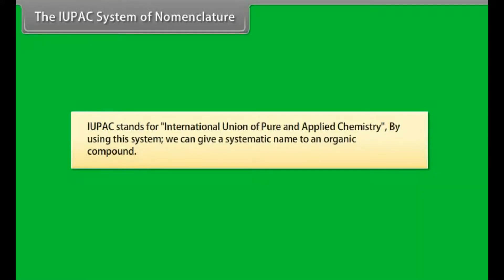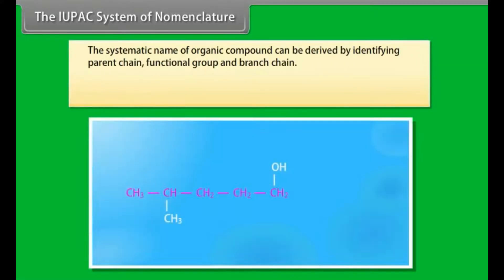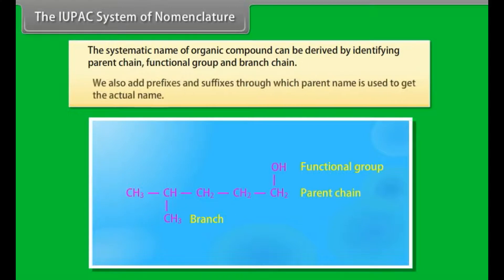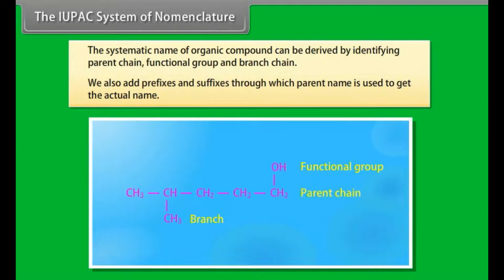The IUPAC system of nomenclature: IUPAC stands for International Union of Pure and Applied Chemistry. By using this system, we can give a systematic name to an organic compound. The systematic name of an organic compound can be derived by identifying the parent chain, functional group and branch chain. We also add prefixes and suffixes through which the parent name is used to get the actual name.